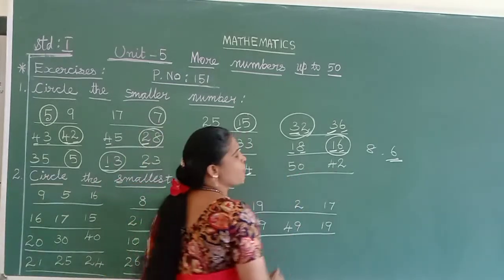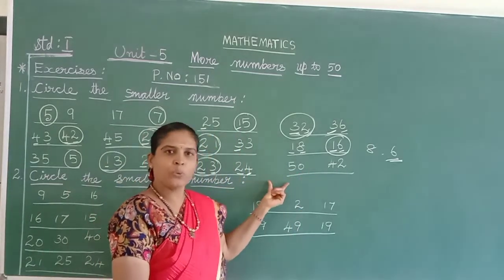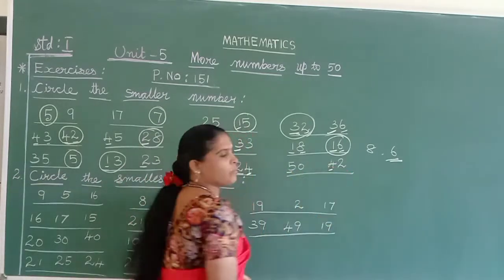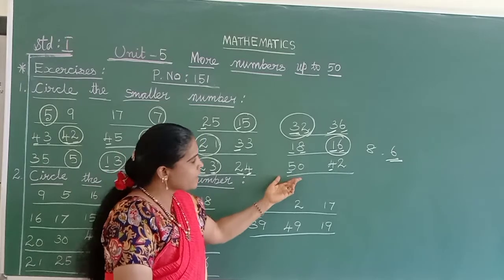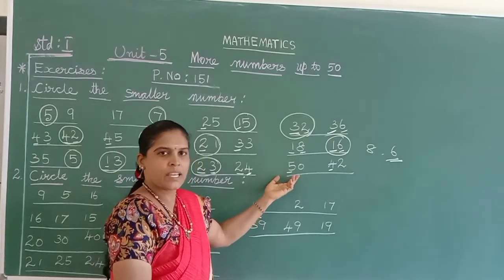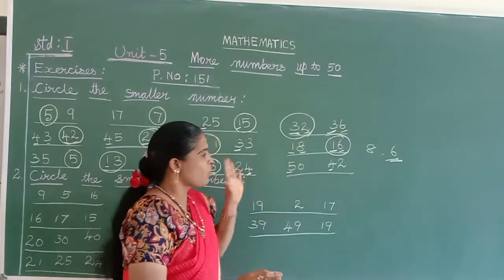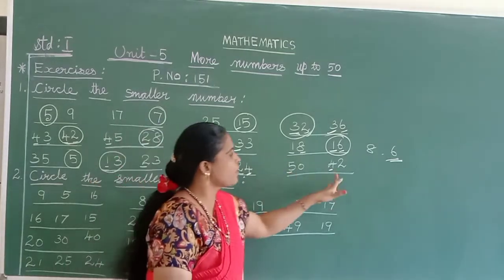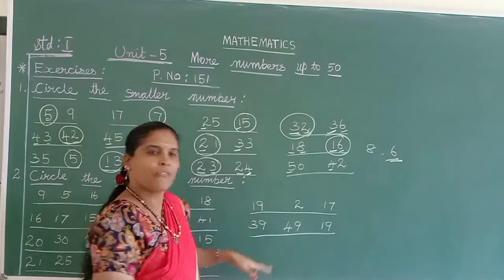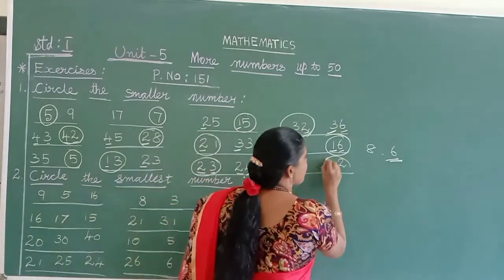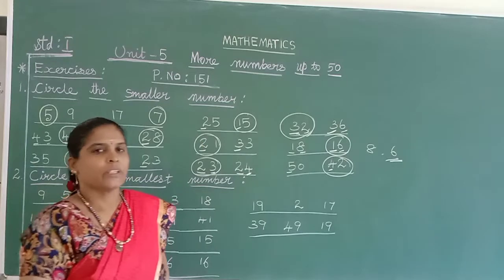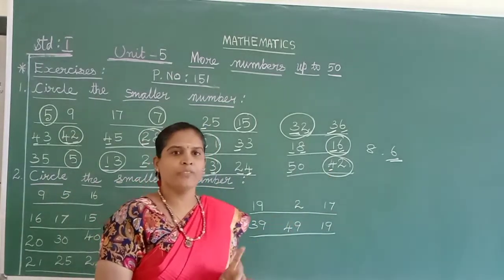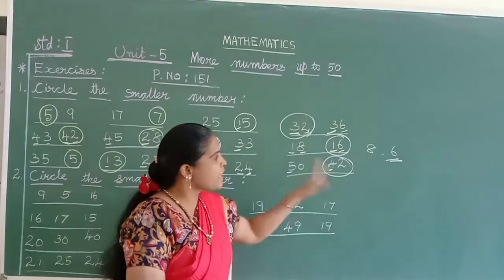Come to 50 and 42. Both numbers have 2 digits. Come to the tens place: 5 and 4 — different numbers. So it's easy — we don't move to the ones digit. Only take the tens column: 4 is smaller than 5. So you should circle 42. You can read: 42 is smaller than 50. Rest of the sums, students can do on their own.